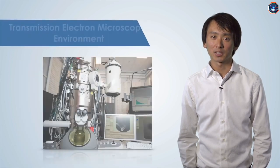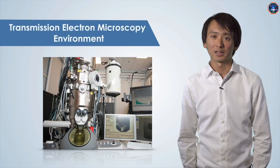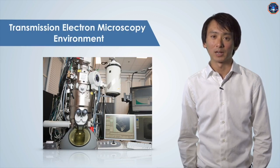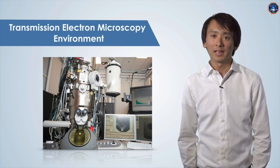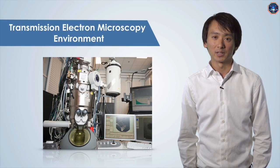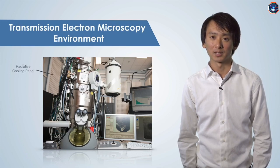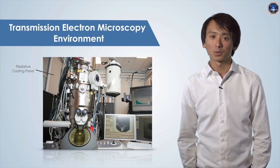Thus, TEMs are usually housed in basement rooms that have thick concrete walls, or are on floating tables that will automatically compensate for any building vibrations. As you can see in this image, radiative cooling panels can be used to keep the temperature constant. Water flows through these panels to help control the room's temperature.